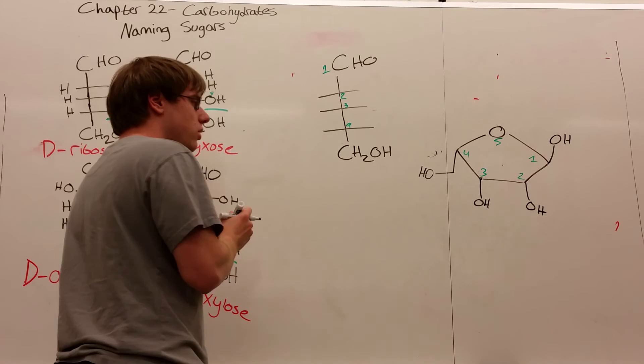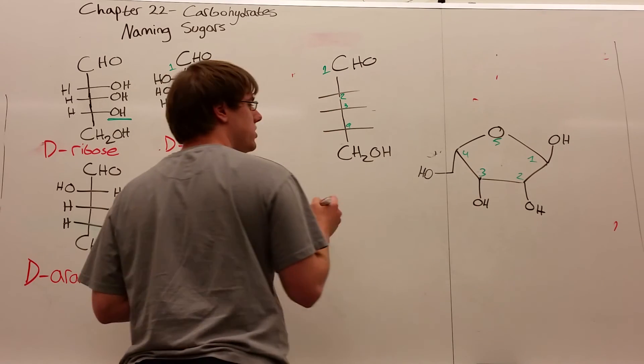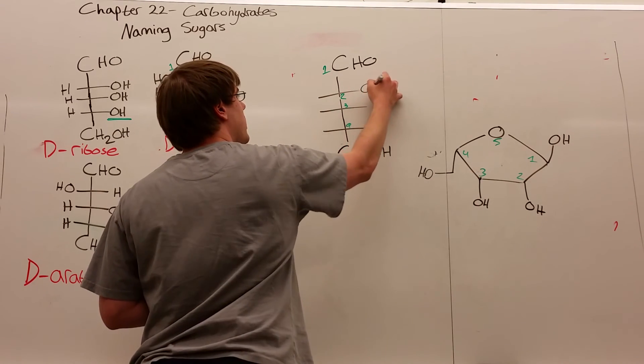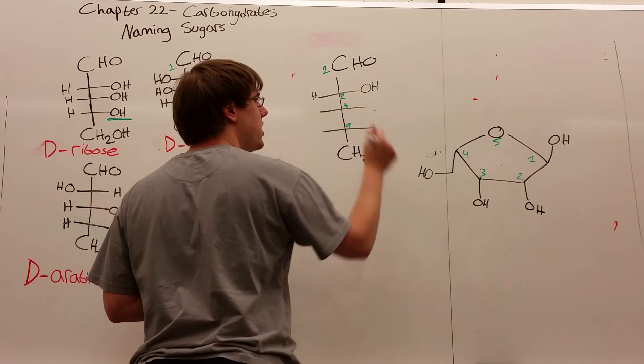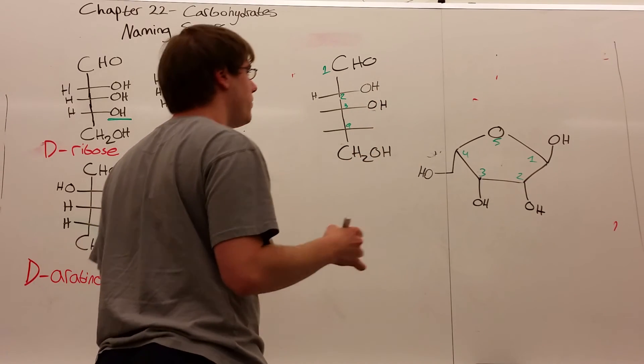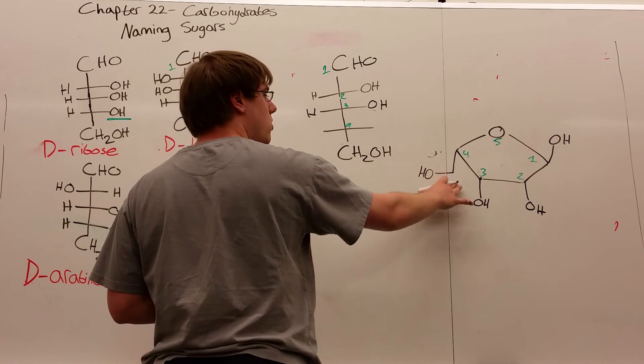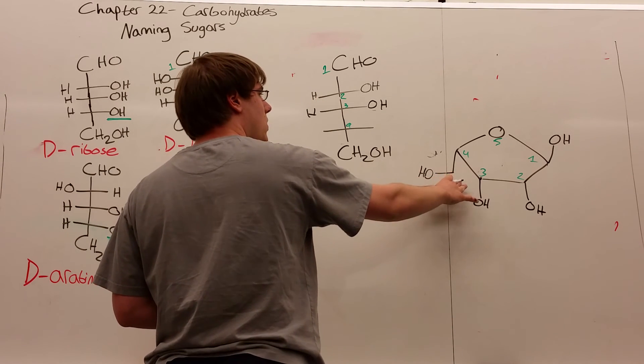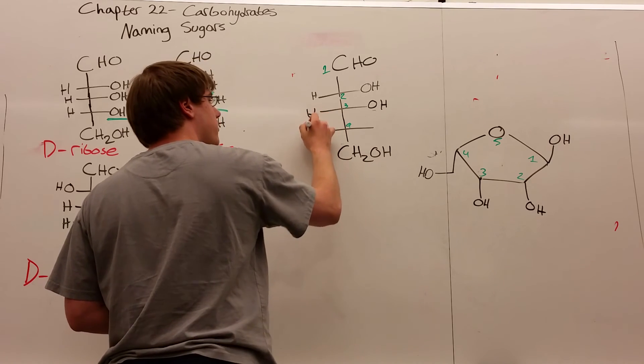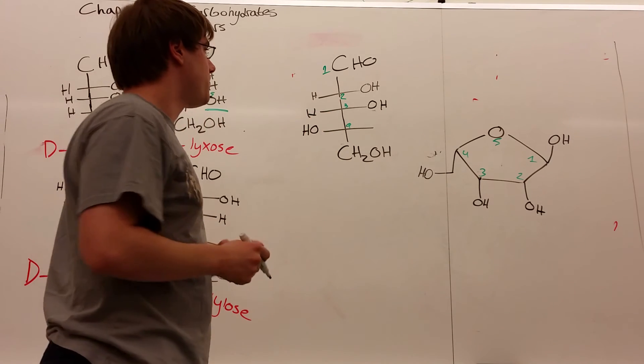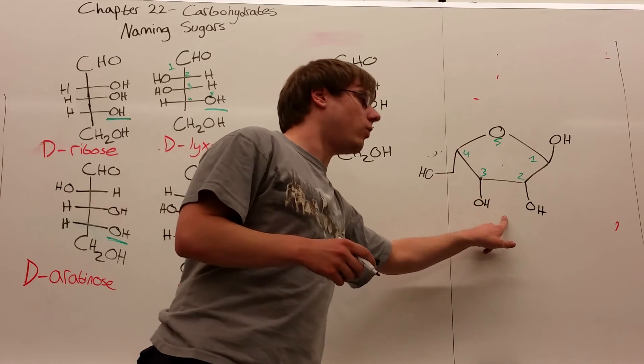Carbon 2 has the OH pointing down, which means it's on the right in Fischer. Carbon 3 has the OH pointing down, so it's also on the right. Carbon 4 has the CH2OH pointing down, which means that OH is on the left. This is the Fischer projection of this Haworth, but that doesn't tell me the name yet.